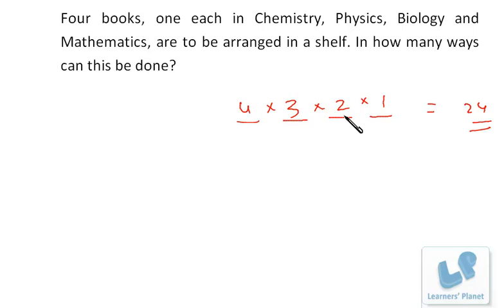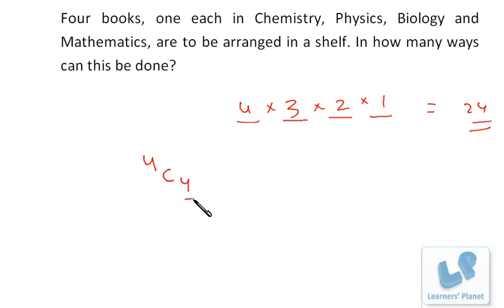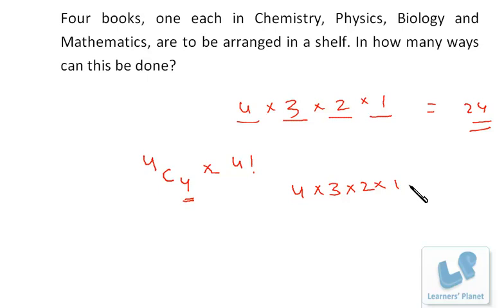If I do this using combination: I have four books to arrange at four places, so I choose all four books — that's 4C4. Now the selected four books can be arranged in 4! ways. So it's 4C4 × 4! = 1 × 24 = 24. It doesn't matter which method you adopt — counting, permutation, or combination — you simply have to solve the problem.